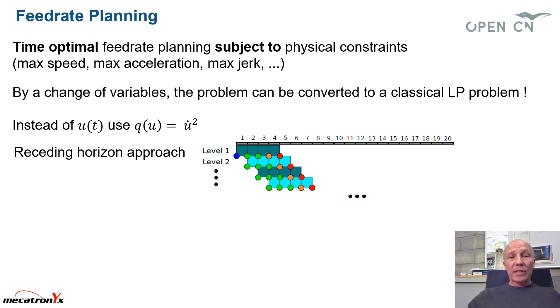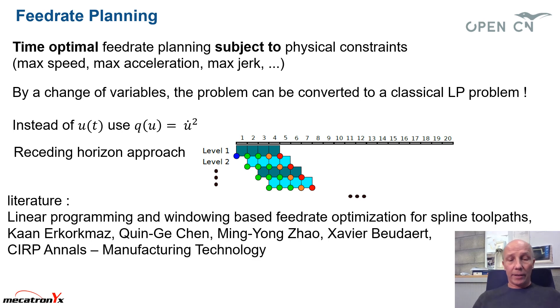Since there are many, many curve pieces, we cannot optimize everything in one single shot. So what we do is a receding horizon approach. We are only optimizing over a short interval and we are shifting this interval after each time we have a solution. So this is the classical receding horizon approach and everything is described in this paper here.